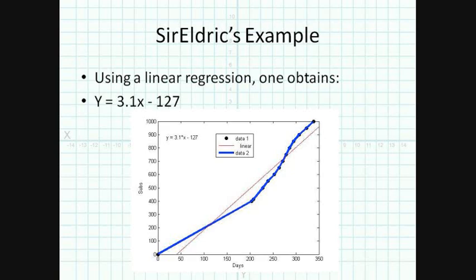It turns out, for Eldrick's case, we have a linear regression of the number of subs y is equal to 3.1 times x, the number of days that have passed, minus 127. You can take that minus 127 just to be like an intercept for us. So basically what this means is that on average, Eldrick is receiving about three subscribers a day, maybe a little bit more.